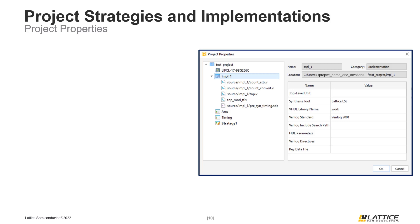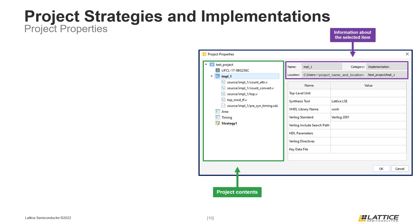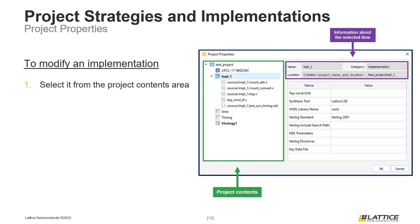The project properties window can be used to view information about the contents of a project or modify the settings for an implementation. On the left side are the contents of the current project, including all settings, strategies, and implementations. When something is selected from the project contents area, information about that item appears on the right. To modify the settings for an implementation, select it from the project contents area. If the window was opened by right-clicking an implementation, that implementation will automatically be active when the window opens.